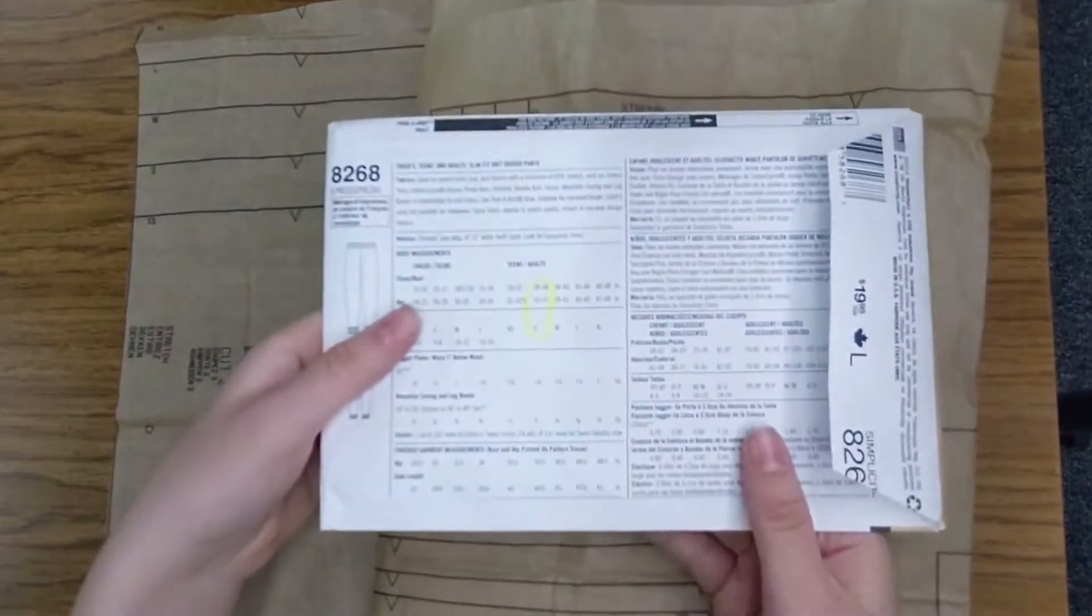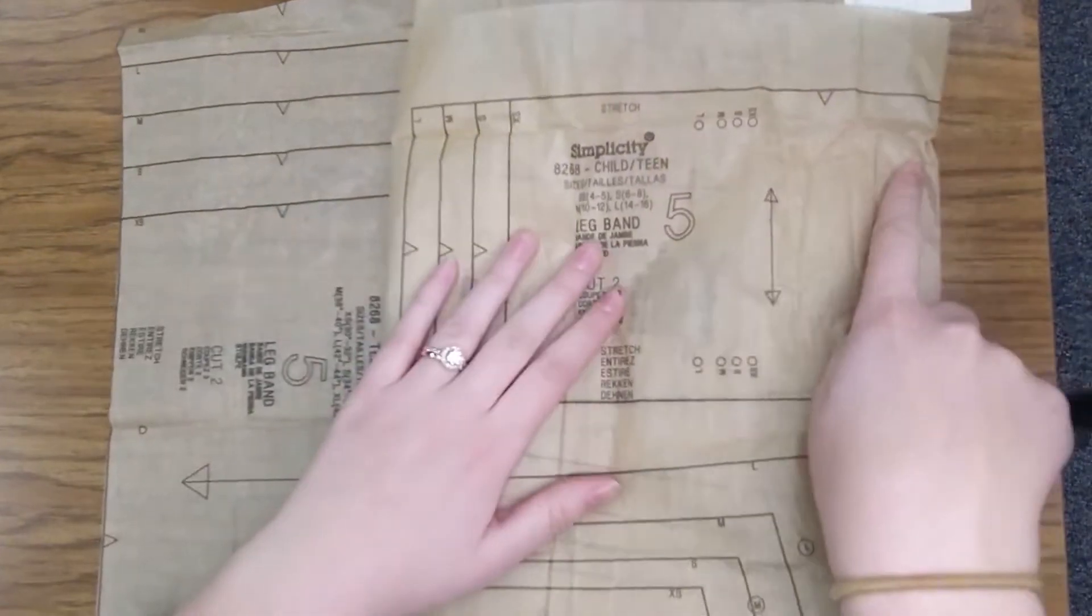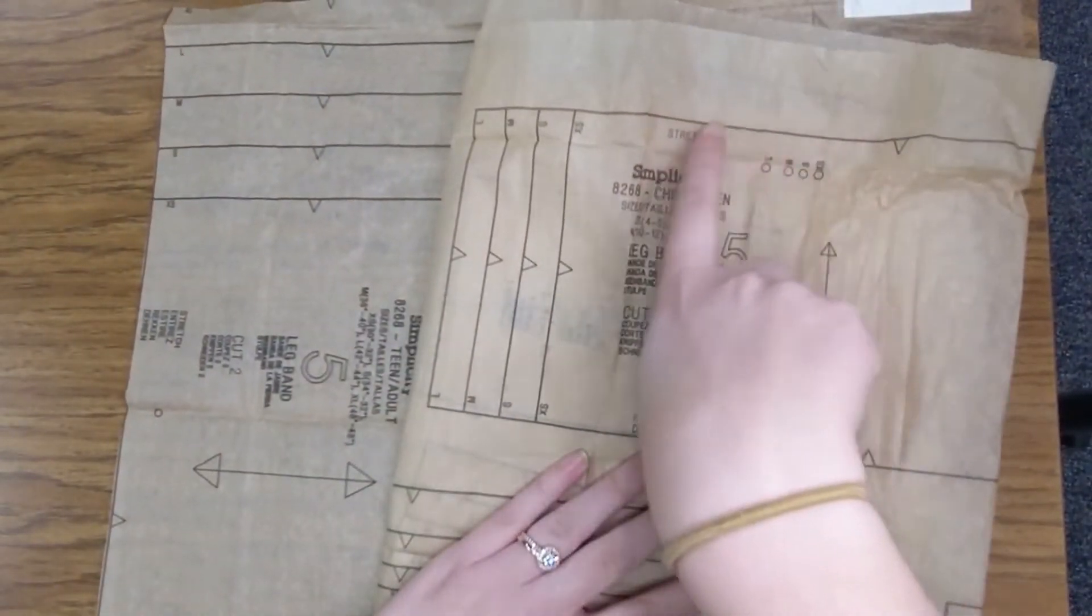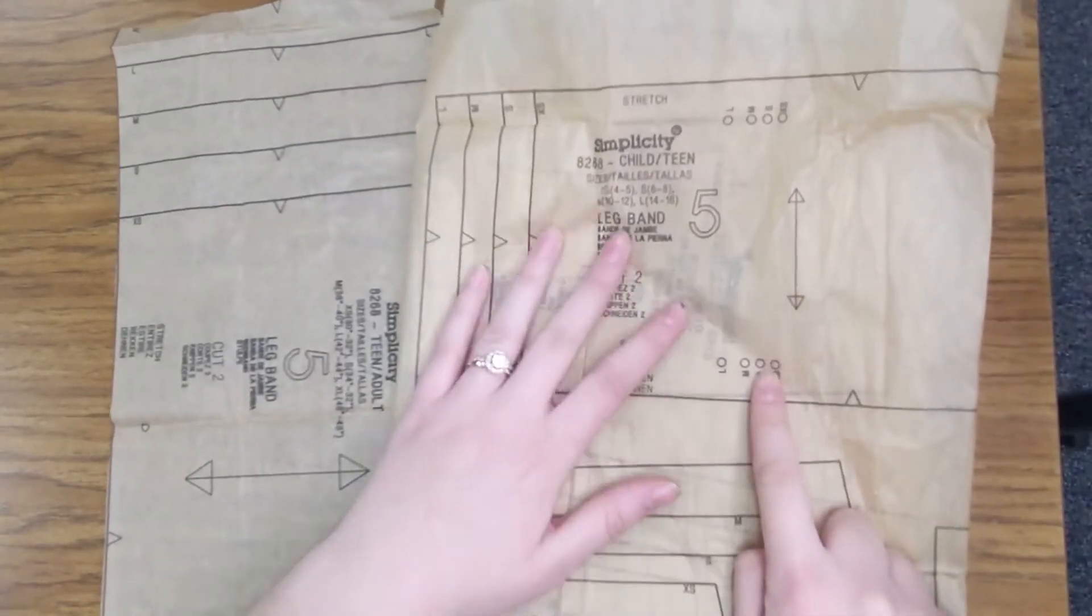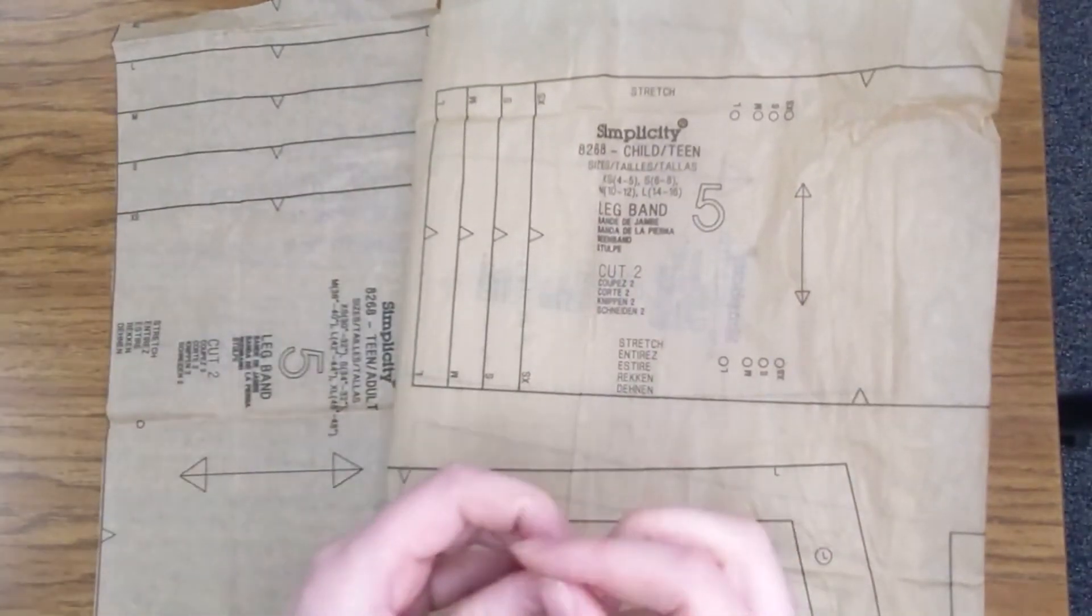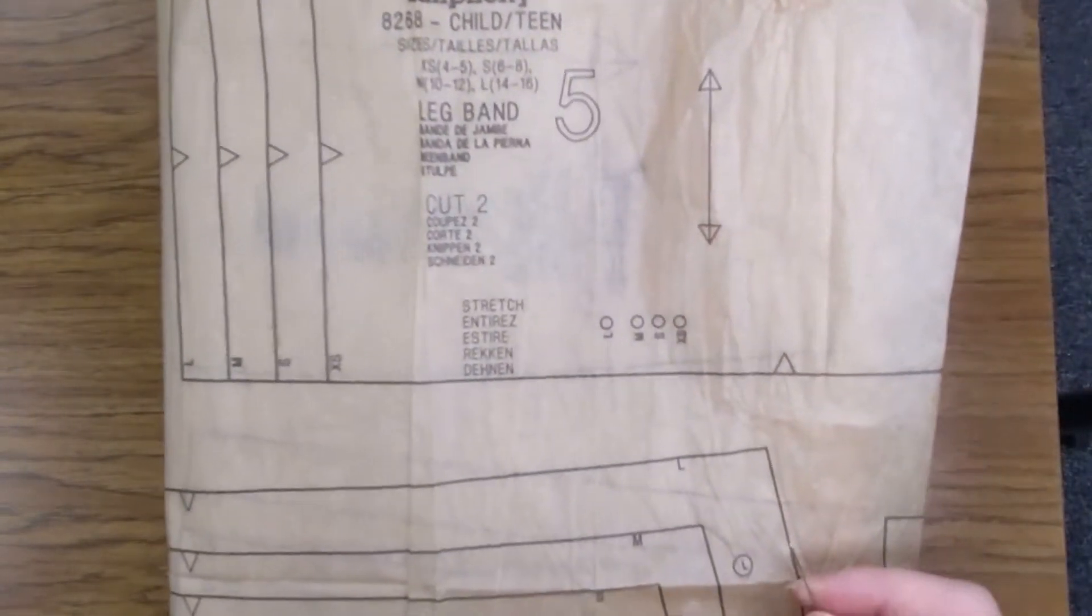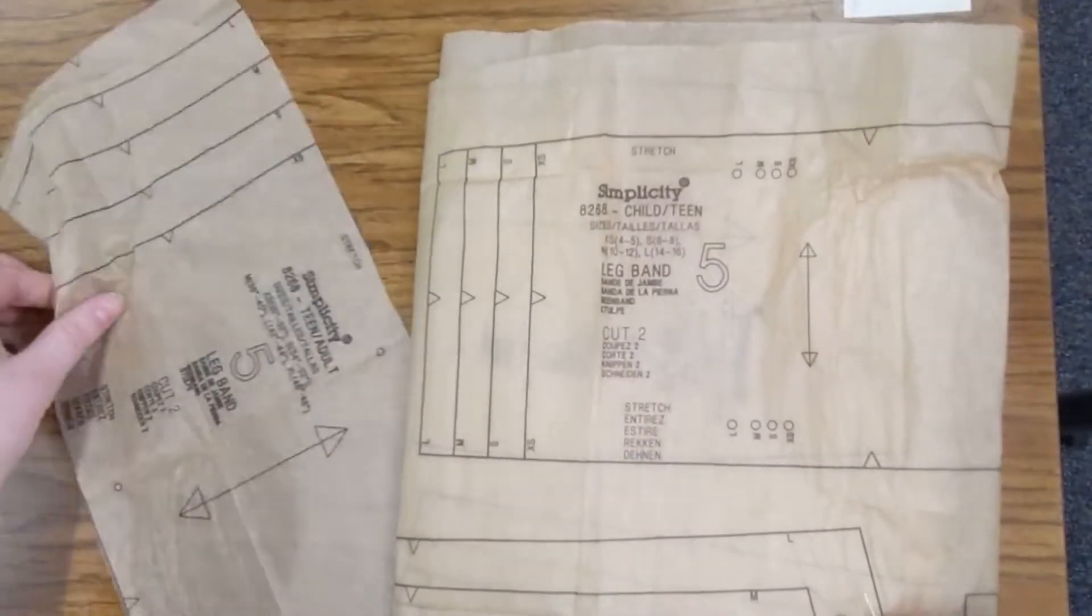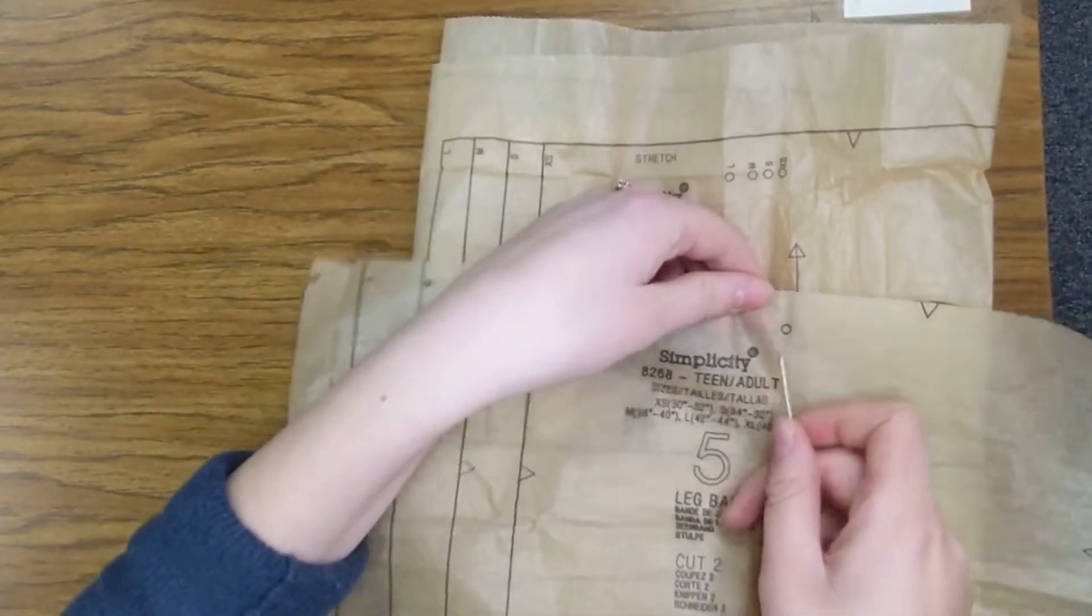You should have already picked what size you're doing and circled it. I'm doing a small, so I know that if I was cutting this out, I would cut along this line because that's kind of like a one-size-fits-all line. And then I'd go down this small line. And then later, when I'm marking my dots, I would look for any dots that are marked small, so like that one, or just any generic dots, like on this piece right here. That's the same dot for all sizes.